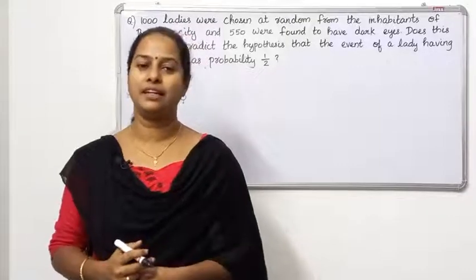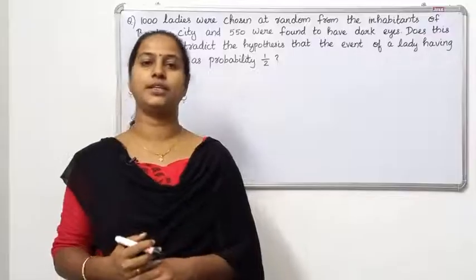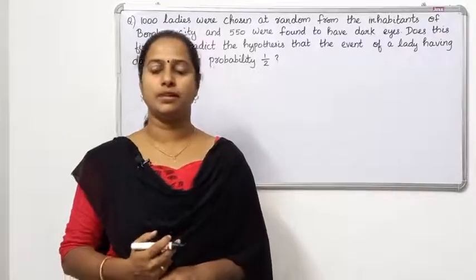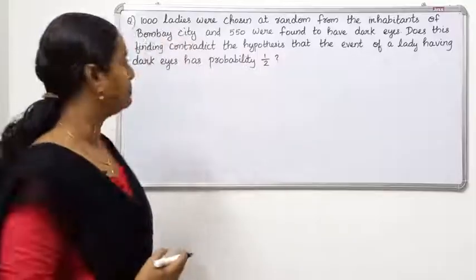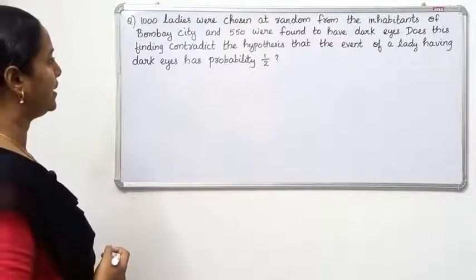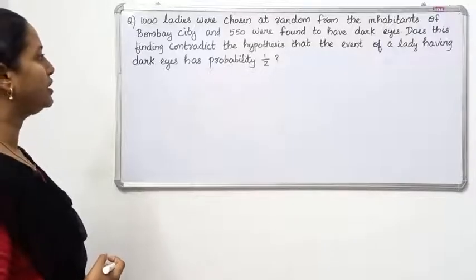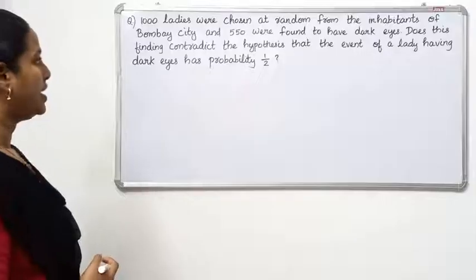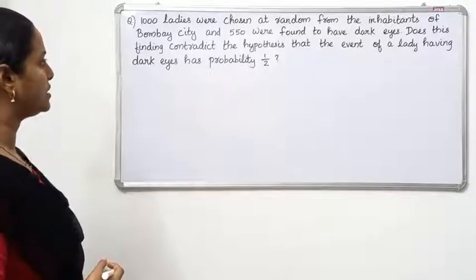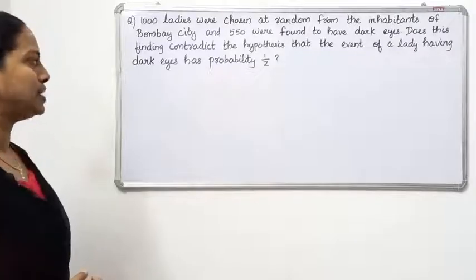We will test the population proportion. This test is applied to the following problem: 1,000 ladies were chosen at random from the inhabitants of Bombay city and 550 were found to have dark eyes. Does this finding contradict the hypothesis that the event of a lady having dark eyes has probability 1 by 2?